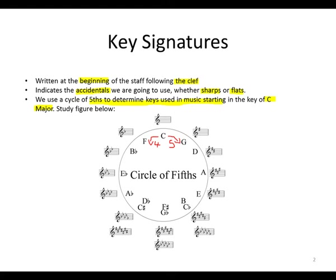So that means that from C — C, D, E, F, G — that will be our next key, and it will only have one sharp. The same thing: G, A, B, C, D. And then with our D, it will have two sharps. So we notice that every time we go clockwise, we add another sharp.